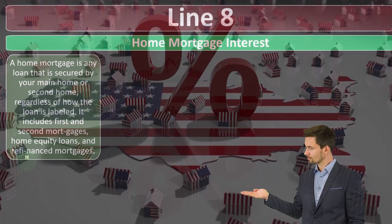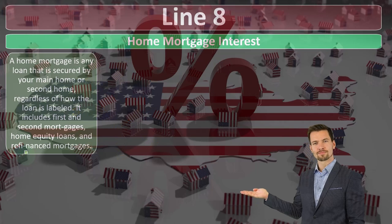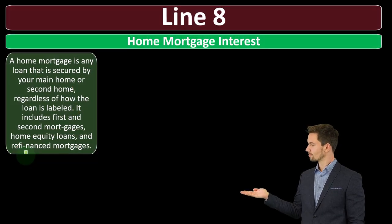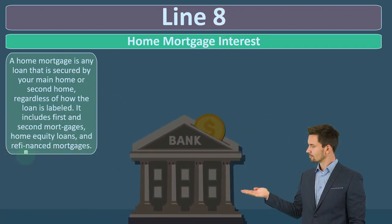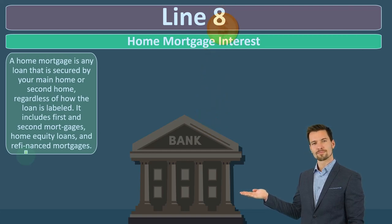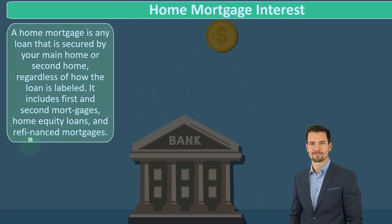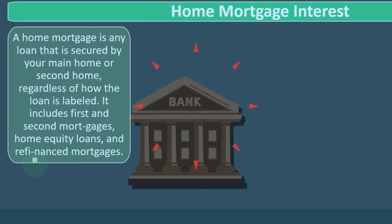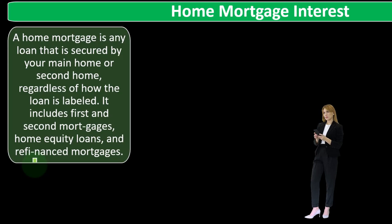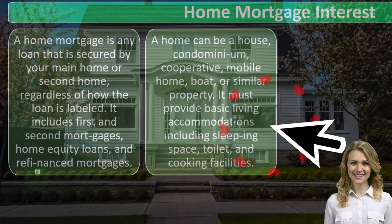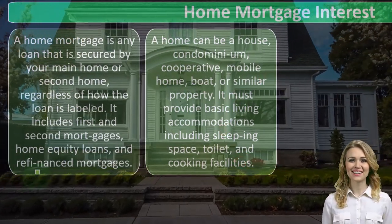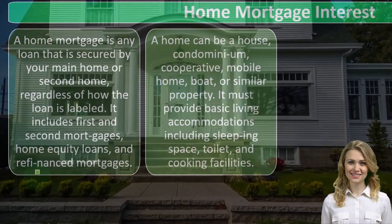Some people confuse the term and say the bank owns the home, which isn't exactly right — you own the home and it's used as collateral. The bank can't come to your home and decide to paint it gray because they don't own it. But if you default on the loan, they can foreclose. A home can be a house, condominium, cooperative, mobile home, boat, or similar property. It must provide basic living accommodations, including sleeping space, toilet, and cooking facilities — a pretty broad qualification.